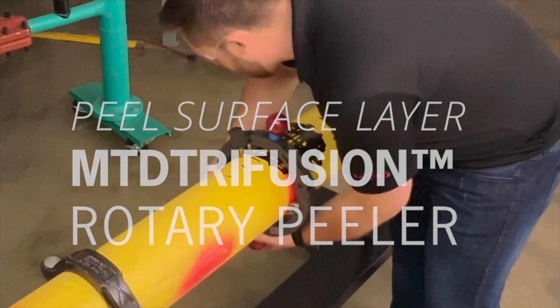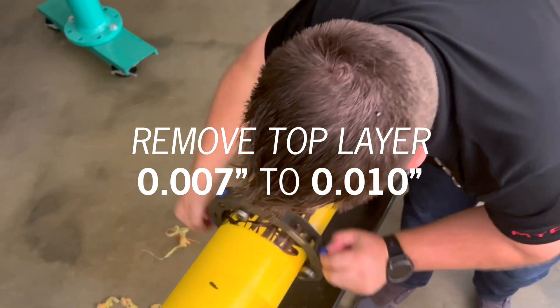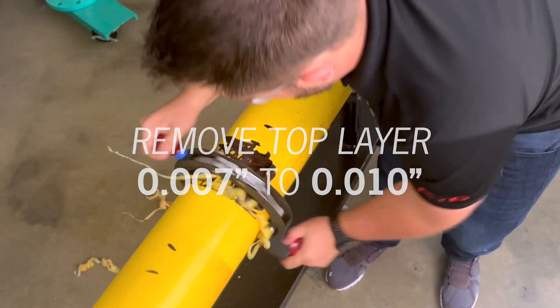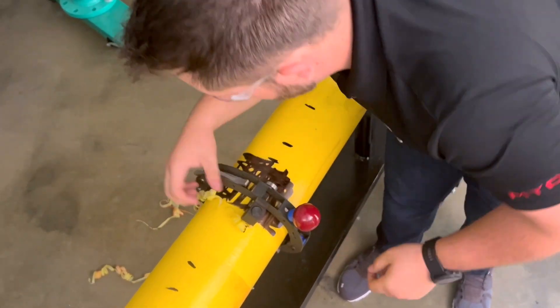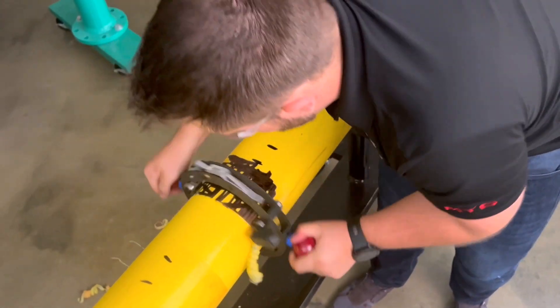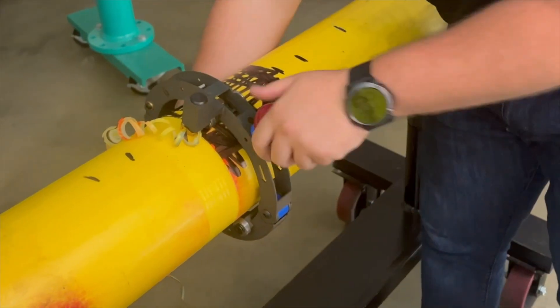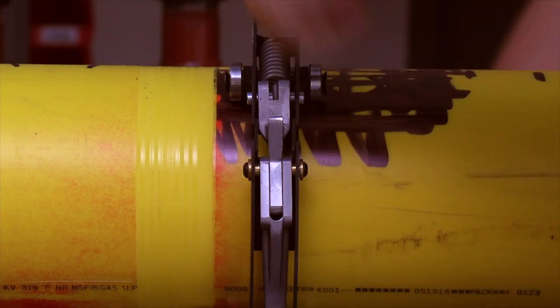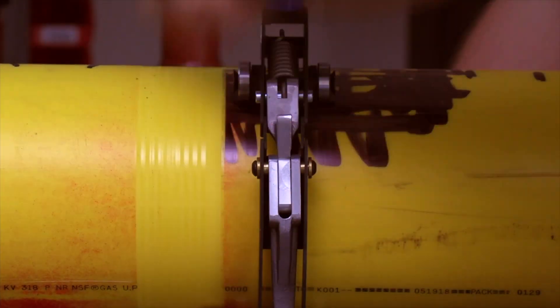Use a peeling tool to peel away the top layer of pipe surface. The peeler should remove at least seven to ten thousandths of plastic with each pass. If your peeler is removing less, it may not be working as it should. Ensure all witness marks are removed. We're using an MTD rotary peeler. The rotary peeler is quick and easy to use and consistently removes the required amount of material.